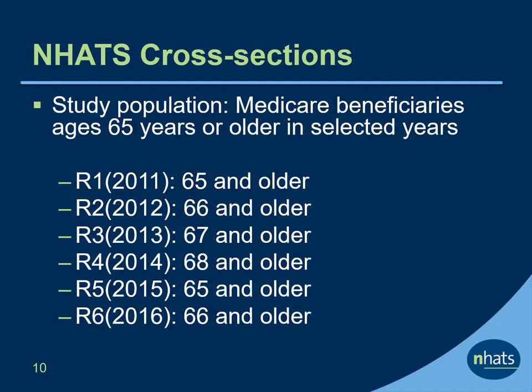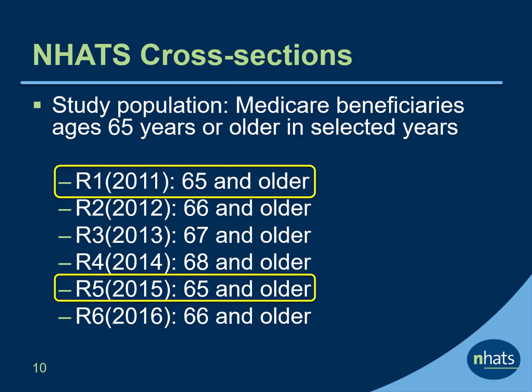Note that the lower bound of the age range represented increases over time until the sample is replenished. For example, in round 1 the sample represents persons ages 65 and older, whereas in round 2 the lower bound is now 66, in round 3 the lower bound moves to age 67, and so on. However, in round 5, when the sample is replenished, NHATS once again represents persons ages 65 and older, then in round 6 ages 66 and older, and so on until the next replenishment.